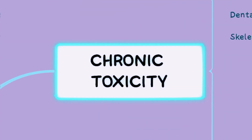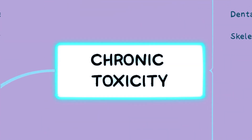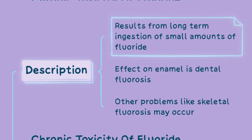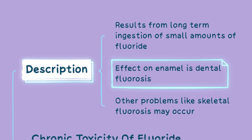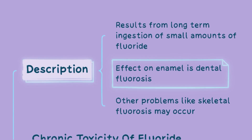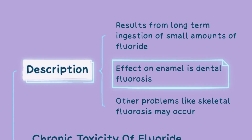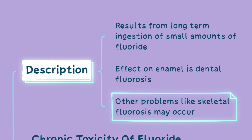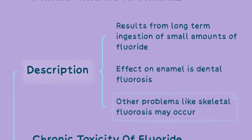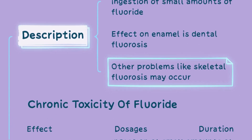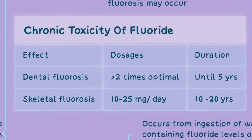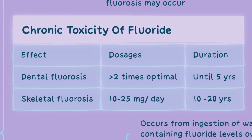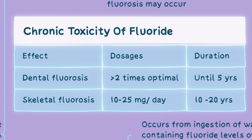The next type is chronic fluoride toxicity, which occurs as a result of long-term ingestion of small amounts of fluoride. It can lead to various health issues, with dental fluorosis being the most common effect on enamel. Additionally, skeletal fluorosis can occur with higher doses over an extended duration. Skeletal or dental fluorosis occurs depending on the amount of fluoride ingested and the time period, as shown in this table.